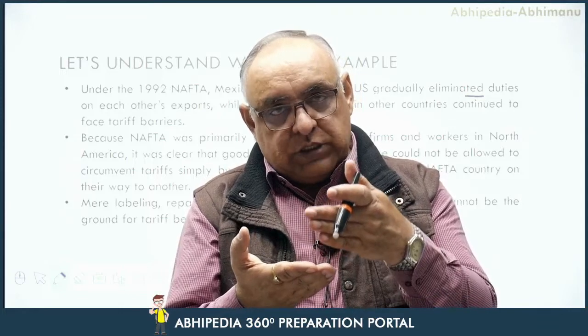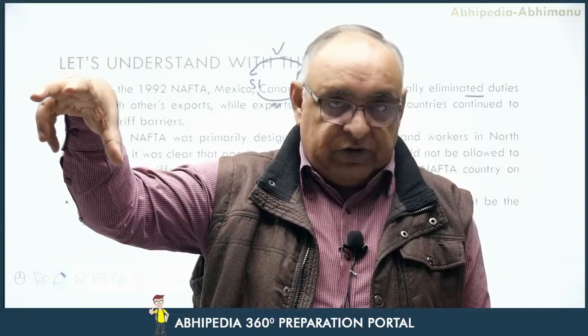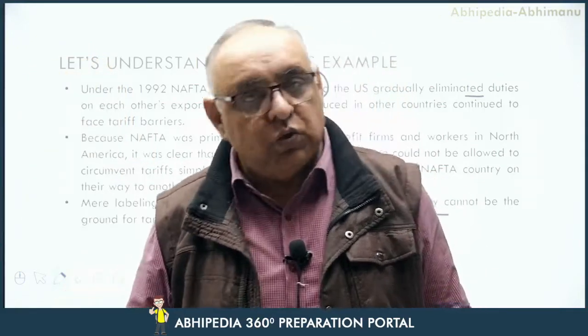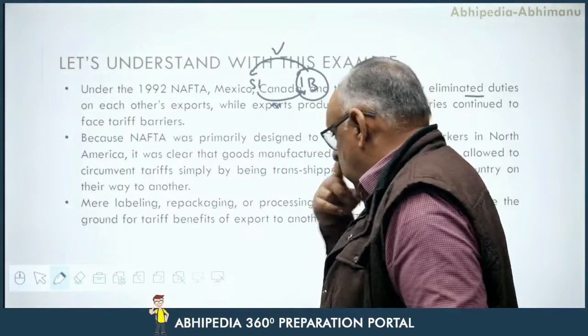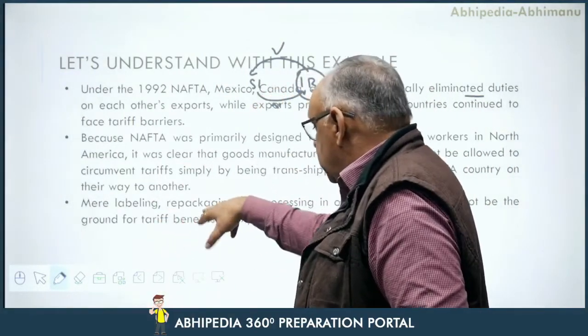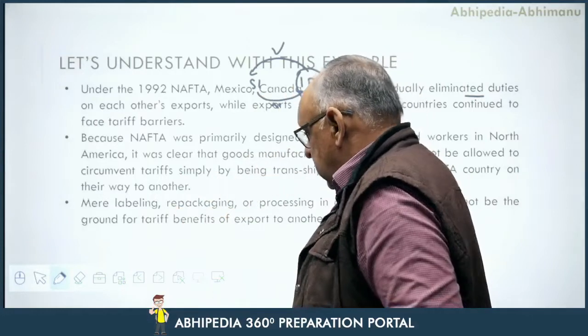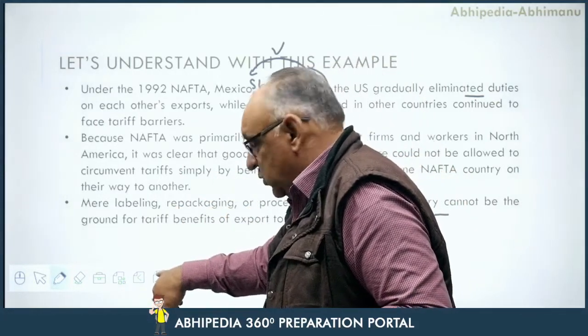When agreements are made, the rules and criteria are defined within the Rules of Origin provisions. All these processes, products, and economic activities are deemed to be manufacturing activities in a particular country, and they come under Rules of Origin. Only those goods receive preferential tariff treatment, ensuring no other country can take benefit by routing goods through, say, Mexico to America.